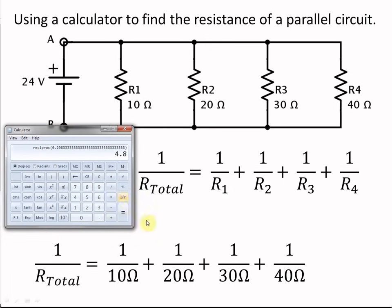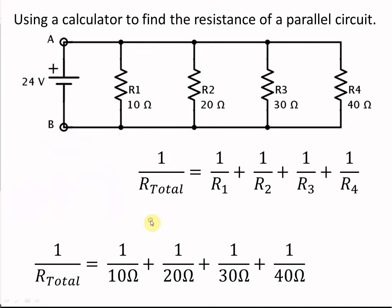And that's the answer. 4.8 ohms. That's how you quickly use a calculator to find the solution to a resistors in parallel problem. Give it a try. See the same answer. Thanks for listening.